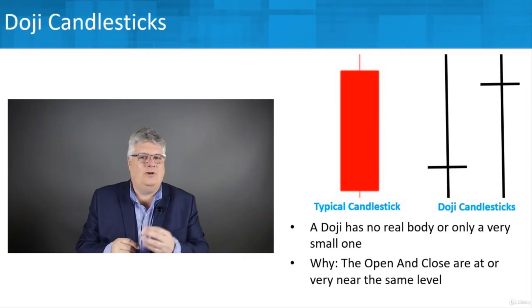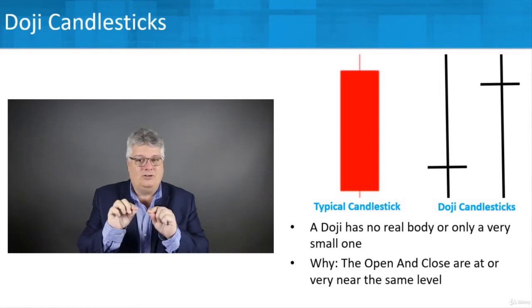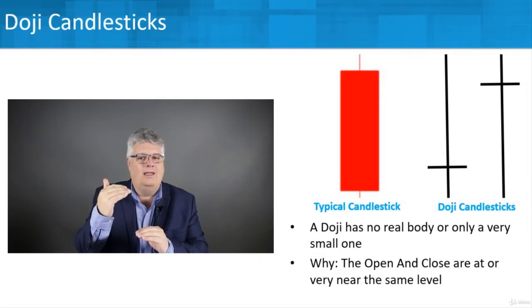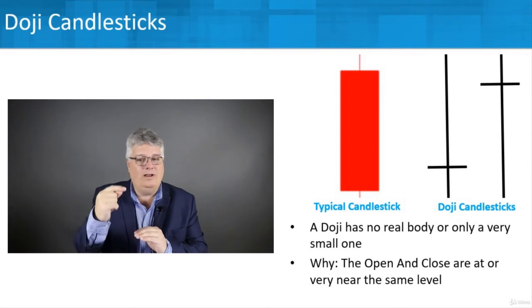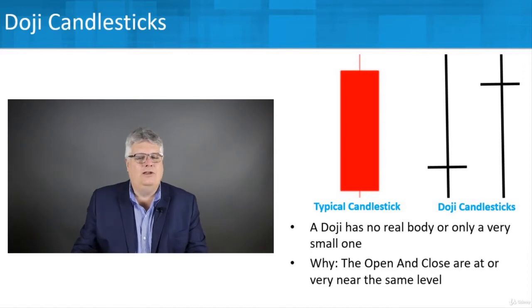Looking at these doji candlesticks, one has the open and close near the bottom with almost no candle body — they're nearly the same price. On the far right, prices opened high and closed near the high as well. There's still a vertical line with a long wick running through the entire candlestick with a high upper shadow and a low lower shadow, but the doji shows a very small body where the open and close occur near each other.